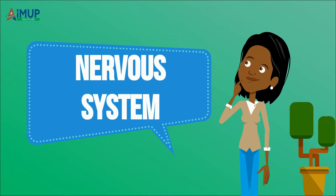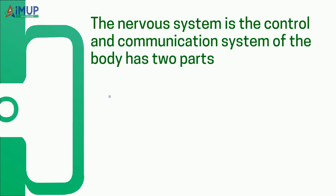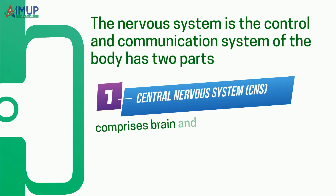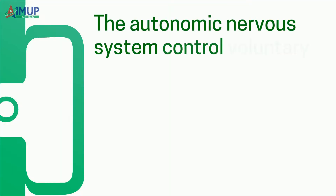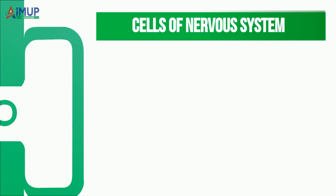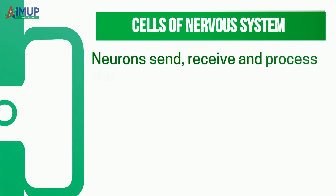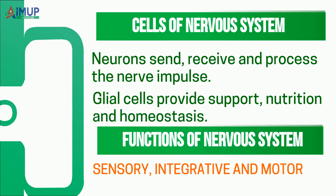The nervous system is the control and communication system of the body. It has two parts: the central nervous system, comprising the brain and spinal cord, and the peripheral nervous system, made up of nerves and neurons. The autonomic nervous system controls voluntary functions and regulates the function of glands; it is of two types: sympathetic and parasympathetic. Neurons send, receive, and process nerve impulses. Glial cells provide support, nutrition, and homeostasis. Functions of the nervous system include sensory, integrative, and motor.